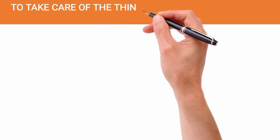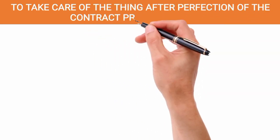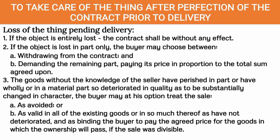With regards the obligation to take care of the thing after perfection of the contract but prior to delivery, the provisions provide for instances when there will be loss of the thing prior to delivery but after perfection. If the thing was lost entirely — meaning it has been completely destroyed, or we do not know where it is located, or even if we know its location it can no longer be recovered — then if it is entirely lost, the contract will be without any effect, or in short, it will extinguish the obligation to deliver.